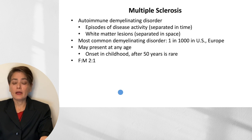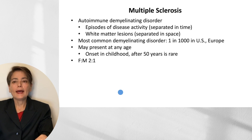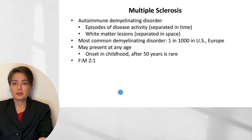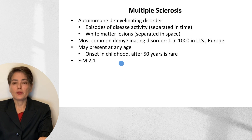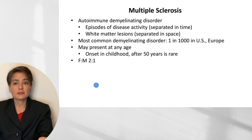Let's begin with our demyelinating disorder, multiple sclerosis. This is an autoimmune disease characterized by episodes of disease activity separated in time, and white matter lesions that can be found throughout the central nervous system, separated in space. It is a common demyelinating disorder affecting about one in a thousand individuals in the US and Europe, and may present at any age, but is uncommon with childhood onset or diagnosis after 50 years. As with most autoimmune disorders, there is a female predominance with a two-to-one female-to-male ratio.